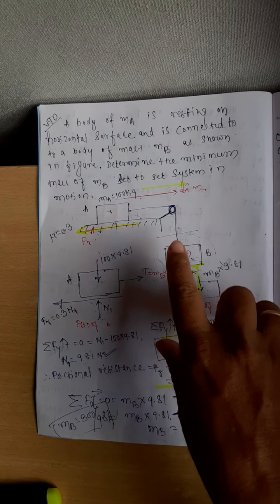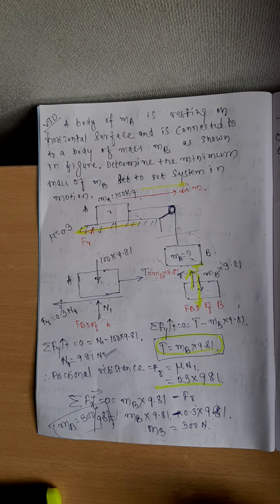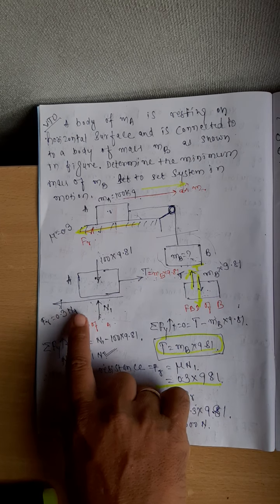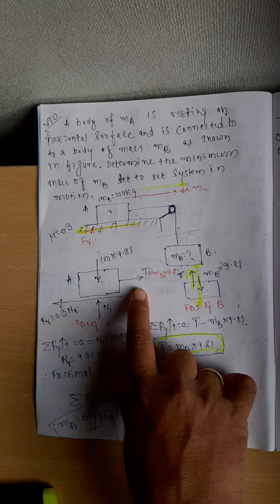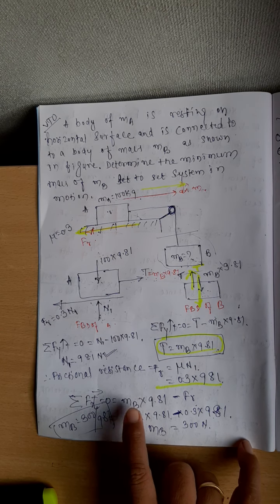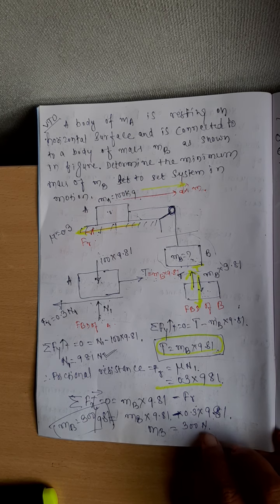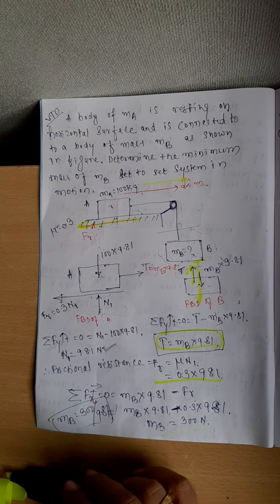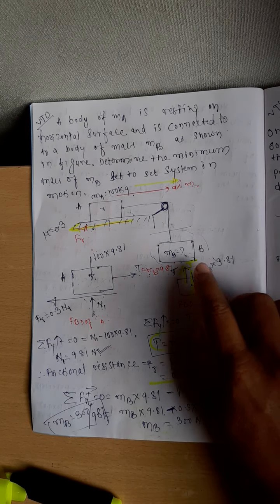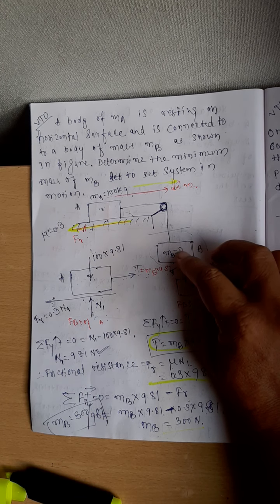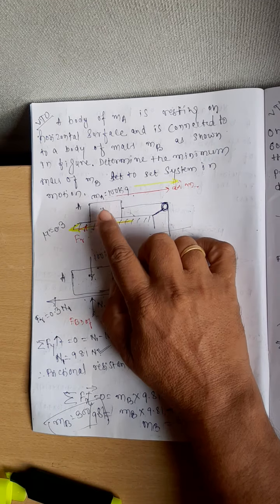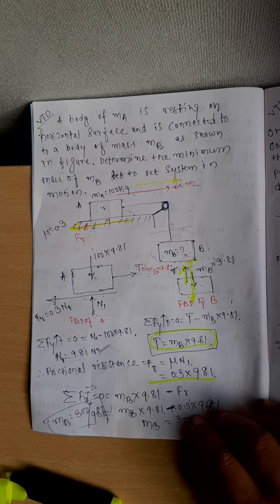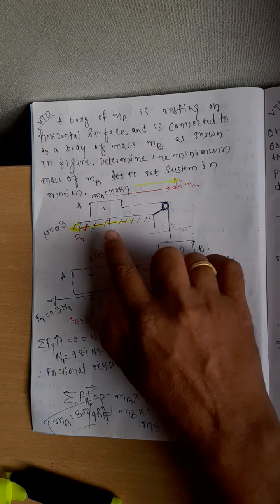The forces in the horizontal direction on block A are the frictional resistance and the tension. Equating: mB × 9.81 − FR = 0, which gives mB = 300. If the mass of B is slightly less than 300, the frictional resistance will be greater than the tension and the block will not move. If it is slightly greater than 300, the block will start to move.